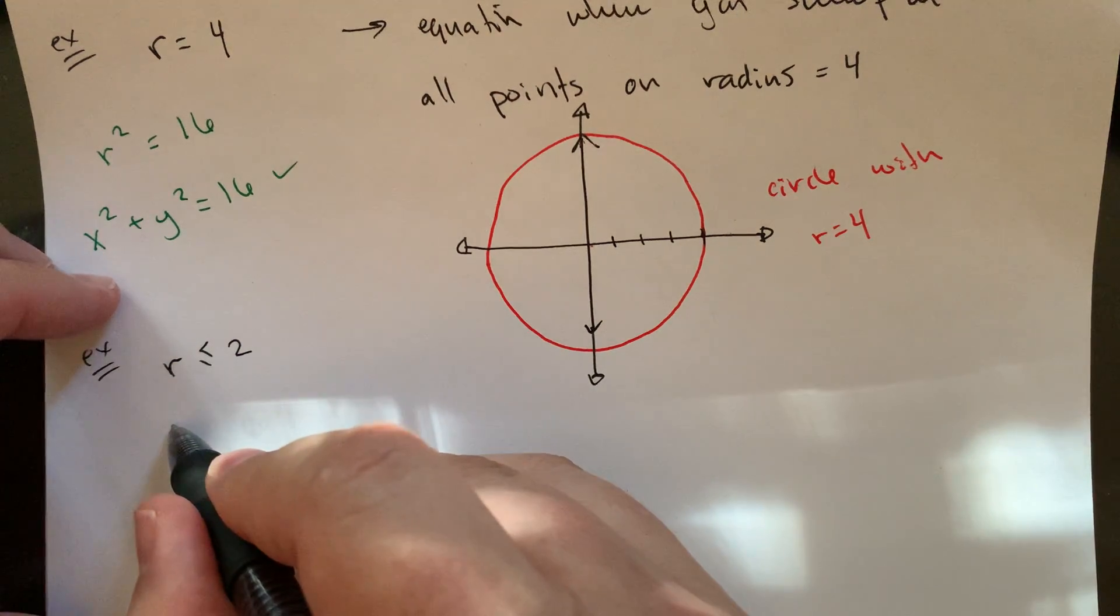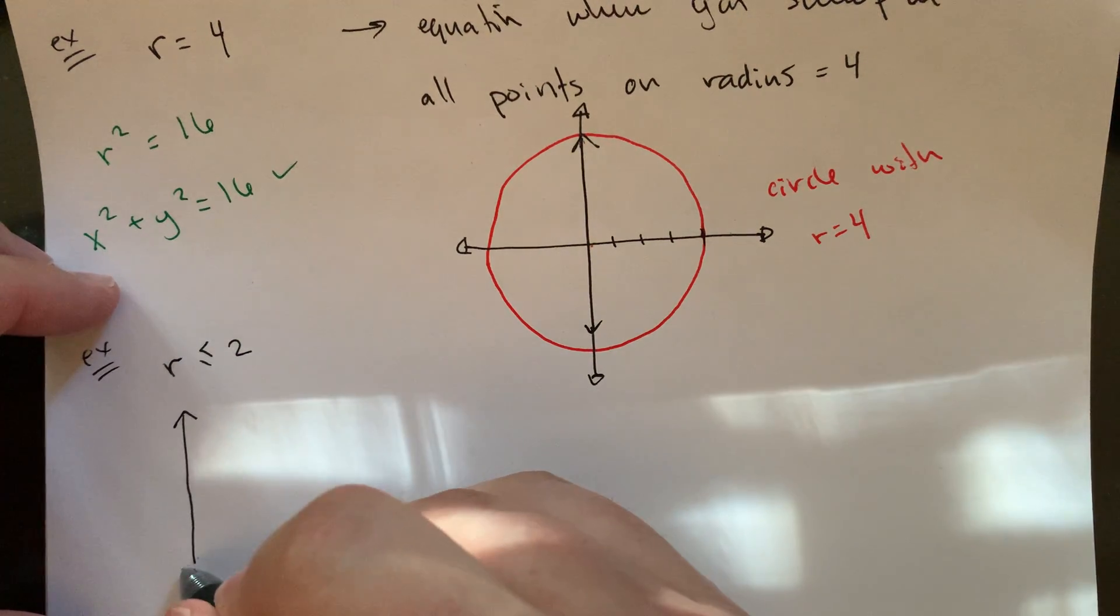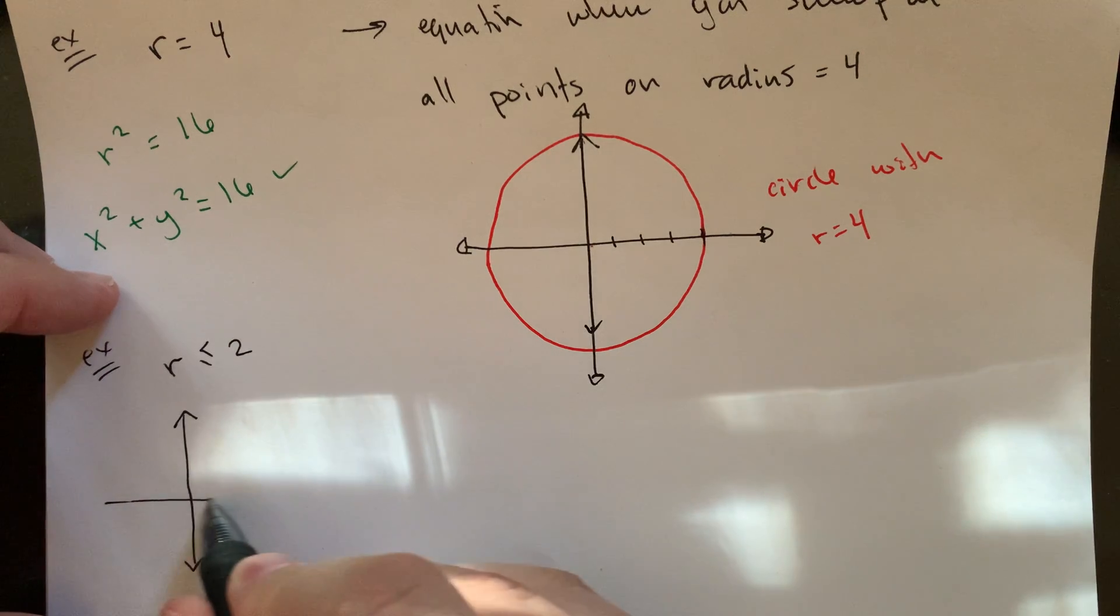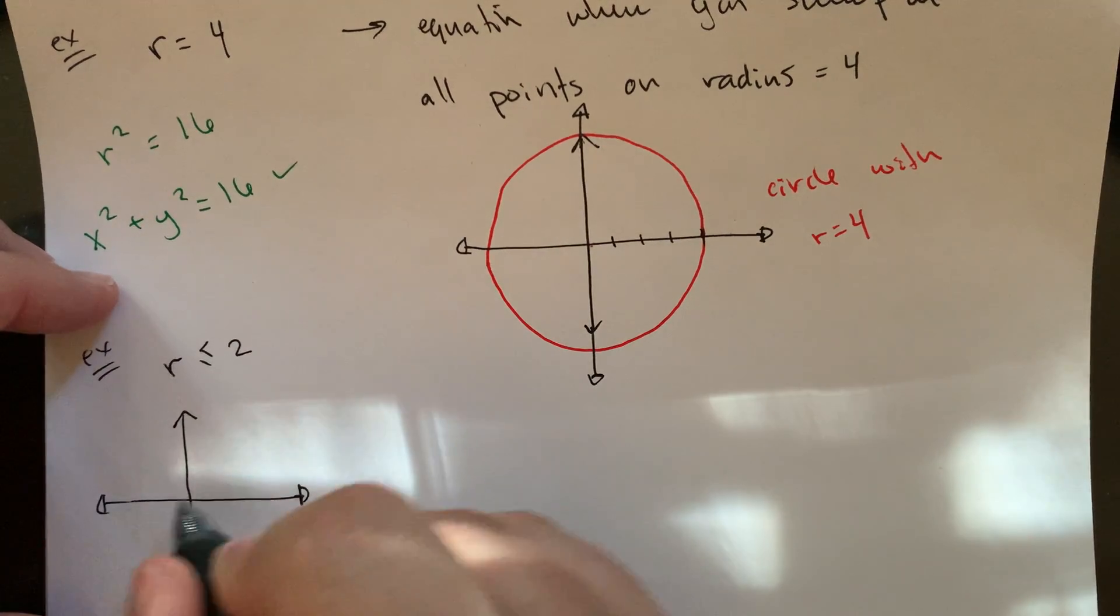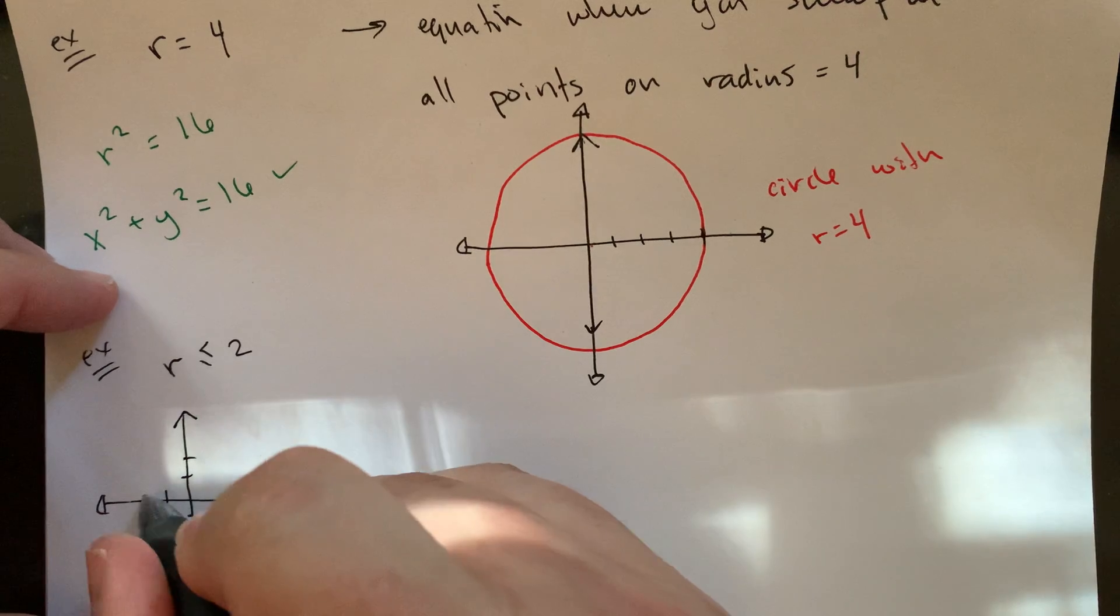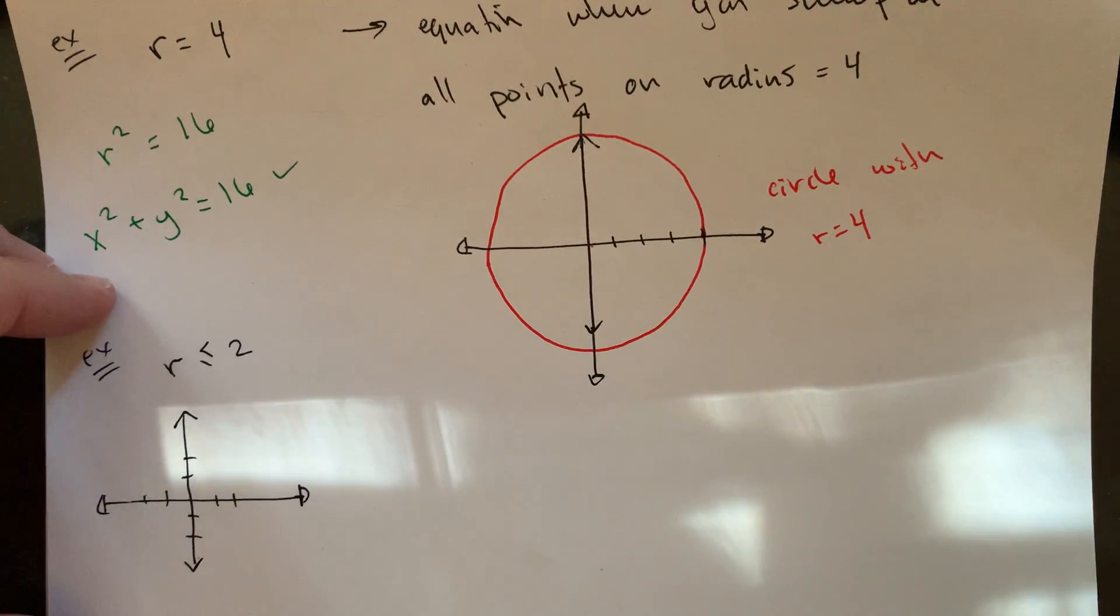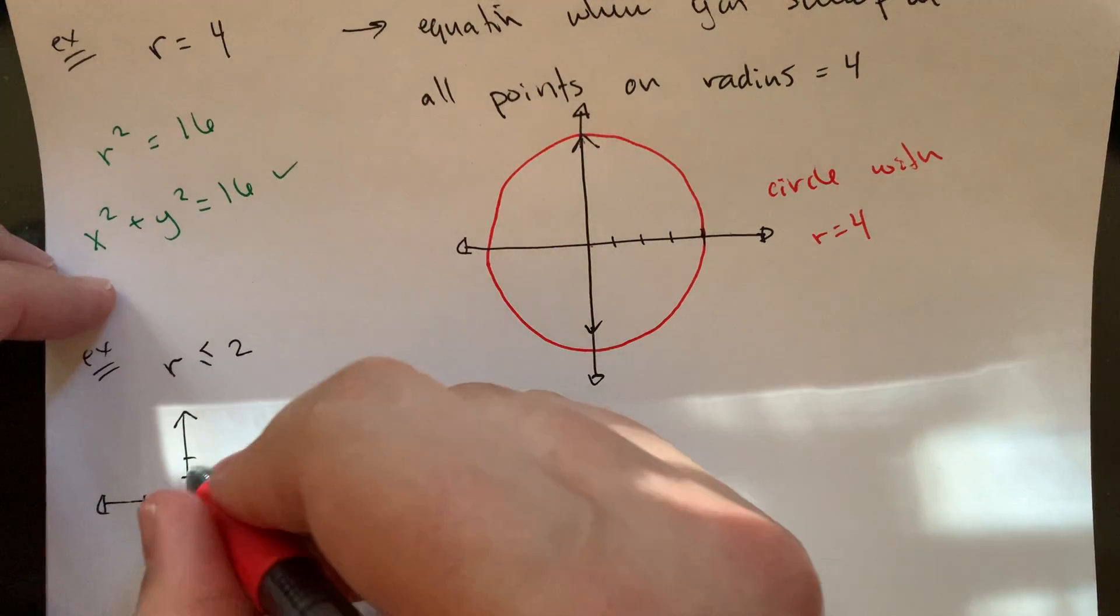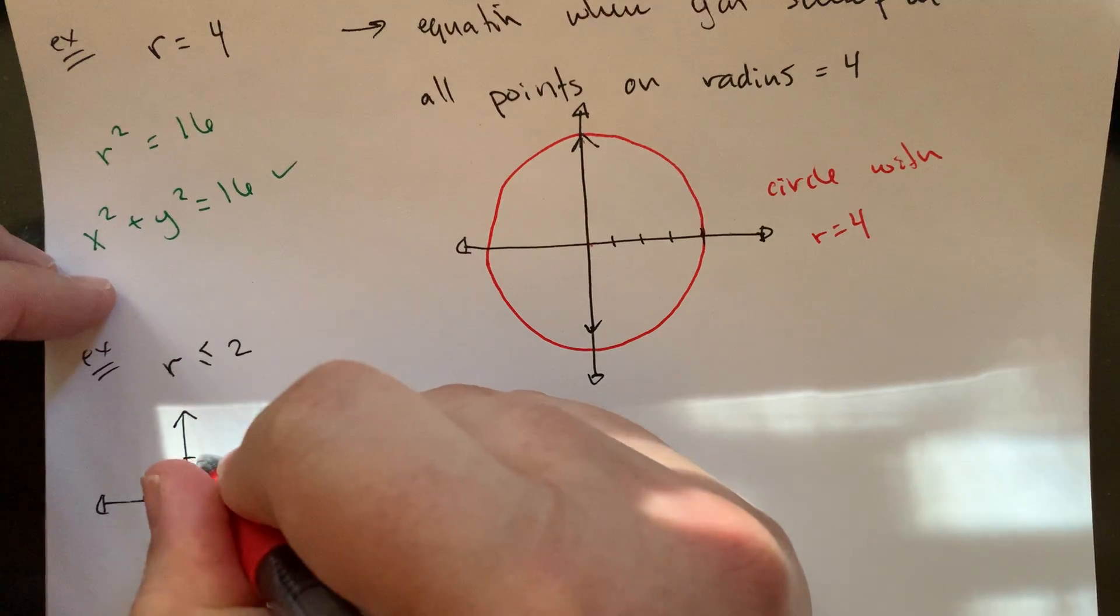So this is more of like a polar inequality. This is still going to be a circle, but this would be kind of like a filled in, like shaded in circle. The idea here is that you are circle with radius two.